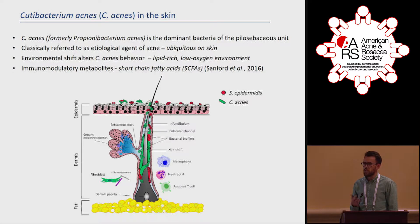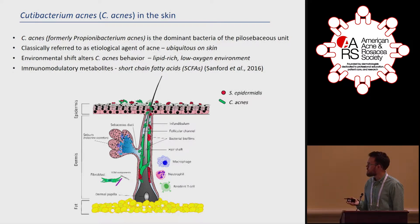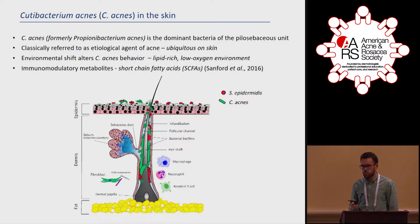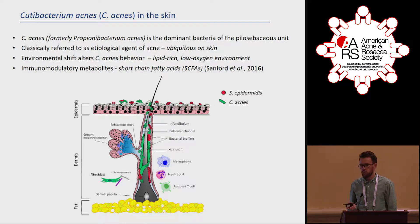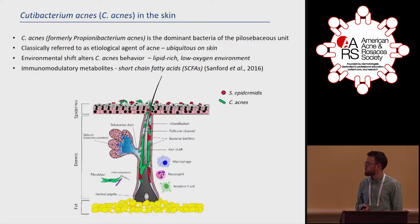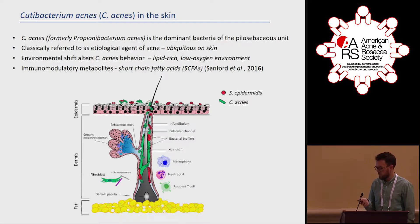For instance, in our lab, when we grow the bacteria under hypoxic conditions and provide a lipid source like glycerol, they can produce immunomodulatory metabolites — short-chain fatty acids — which we've shown promote or enhance inflammation in keratinocytes and sebocytes.